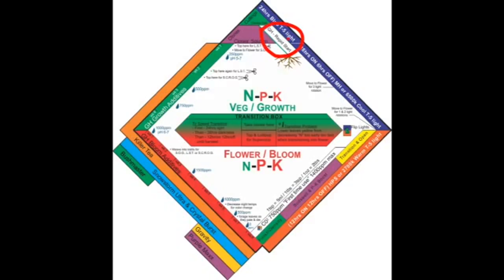Alright, right here, GH Rapid Start. That's one of those things that lives on the roots, and it makes the roots want to make roots. That's what GH Rapid Start does. Alright, right here in the blue section is 24 hours blue light. So this is for cuttings and clones, are going to get 24 hours of light.